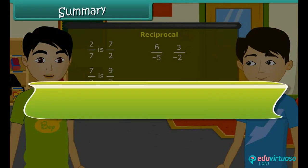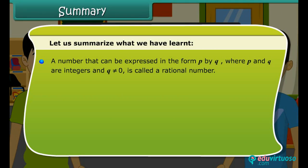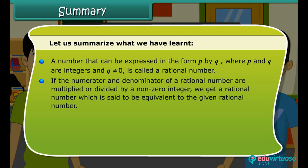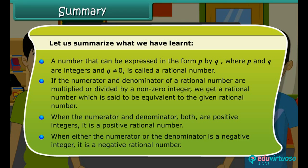Summary. Let us summarize what we have learnt. A number that can be expressed in the form P by Q, where P and Q are integers and Q is not equal to 0, is called a rational number. If the numerator and denominator of a rational number are multiplied or divided by a non-zero integer, we get a rational number which is equivalent to the given rational number. When both numerator and denominator are positive integers, it is a positive rational number. When either the numerator or the denominator is a negative integer, it is a negative rational number.